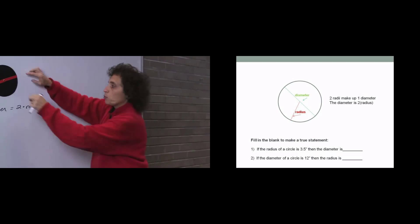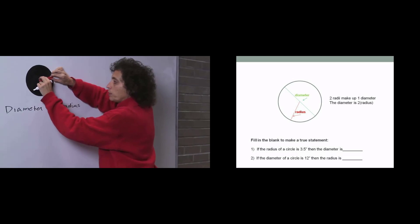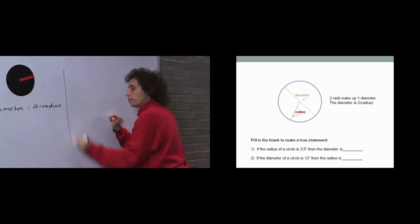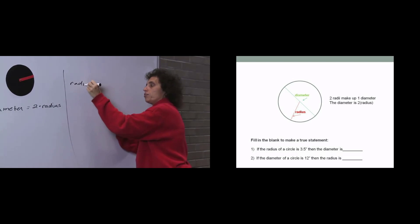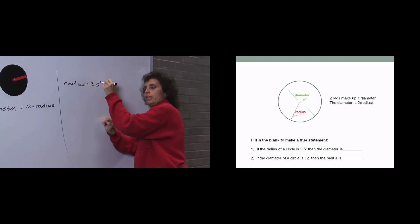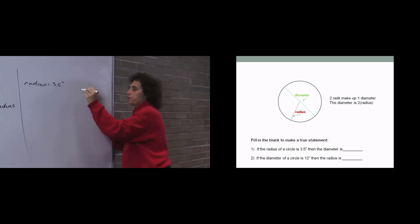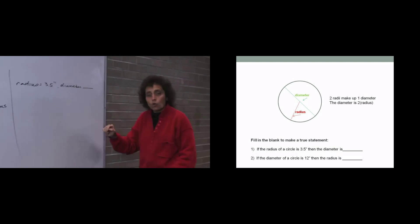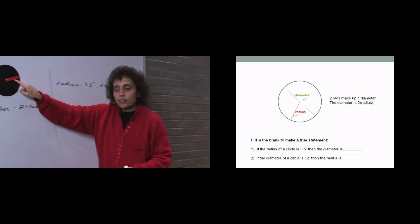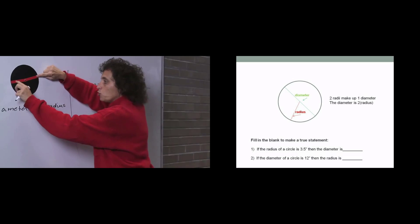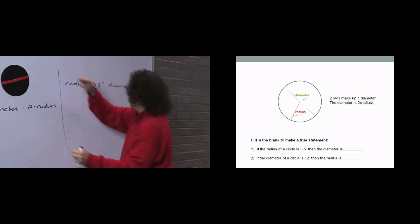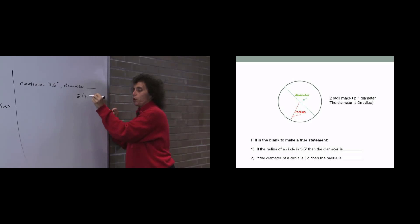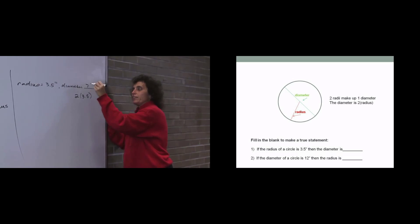If the radius of a circle — remember, radius is the line segment from the center to a point on the circle — if the radius is 3.5 inches, we want to find the diameter. Well, if the radius is 3.5, the diameter is made up of 2 of them. So the diameter is 3.5 plus 3.5, or 2 times 3.5, which is 7 inches.